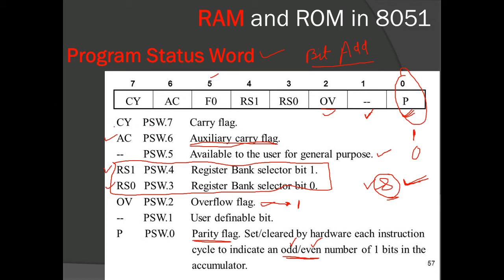PSW.7 is the carry flag — whenever a carry occurs out of any operation, this flag is set. Based on the status of flags such as carry, auxiliary carry, overflow, and parity, we can develop loop operations. For example, we can check if the carry flag is set and jump to another location only when there is a carry, otherwise not jump. This is how we use Program Status Word flags for control flow.